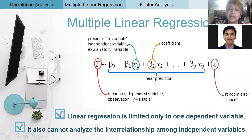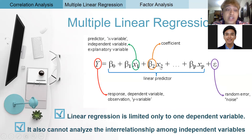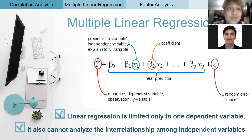The second limitation is that you cannot see the causal relationship between variables. For example, this is grip strength, this is gender, and this is hand size. There is an effect of gender on grip strength, an effect of hand size on grip strength, but also an effect of gender on hand size. Gender has an effect on hand size which subsequently leads to grip strength. You cannot find these relationships using multiple linear regression alone.